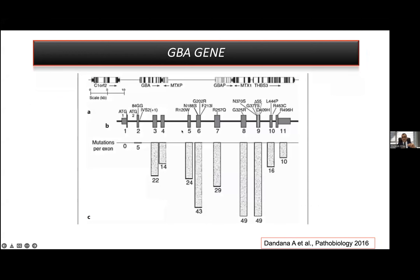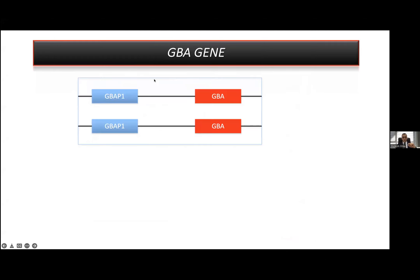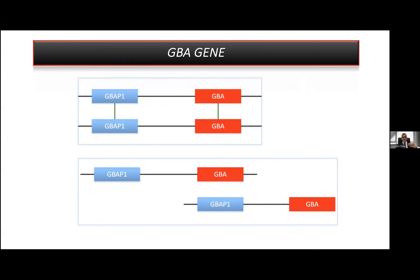There are some specific and common variants in Gaucher disease. A very highly homologous pseudogene exists in Gaucher disease, which causes a problem in the diagnosis. This very similar and nearby pseudogene can cause crossover or recombination problems in this area.